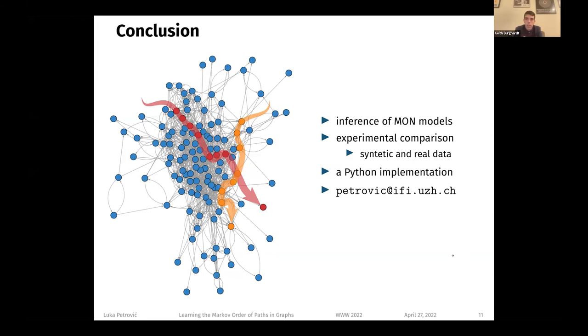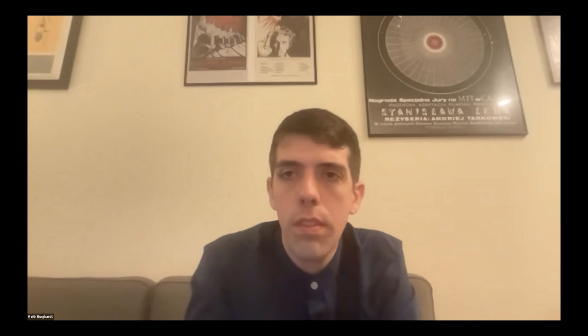Thank you, Luka. Luka happens to be here in the chat. So do people have any questions for Luka? Okay, well, I have a question. So what I found that was surprising was that more data would create an overfitting condition. Could you help me understand that? Why would more data actually give us the wrong value for K?